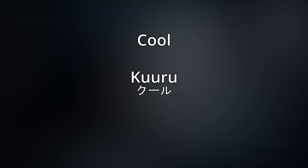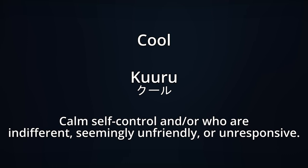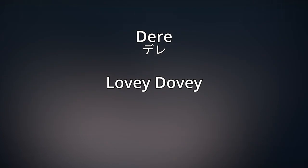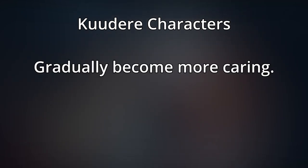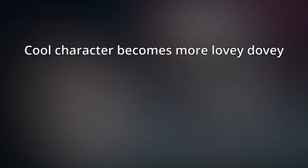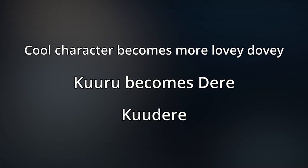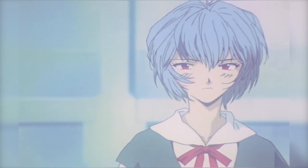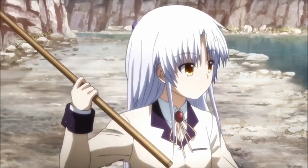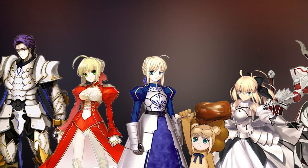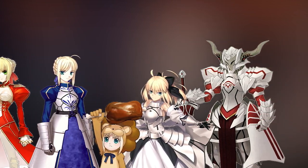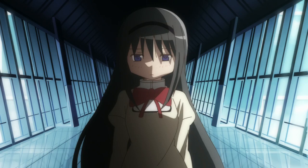Kuu actually comes from the English word cool, written as kuru in Japanese. Cool can mean a few different things, but in this case it's used to describe characters that have a calm self-control, and or who are indifferent, seemingly unfriendly, or unresponsive. And of course, Dere means being lovey-dovey. Kuudere characters are cool, stoic, and a lot of times come across as apathetic or cold-hearted. Throughout the events of the story, the character will gradually become more caring about others and actually start to treasure the ones around them. Some of the best examples of Kuudere characters would include Rei from Neon Genesis Evangelion and Kanade from Angel Beats. You could also throw in Saber from Fate Stay Night, though it should be mentioned it's that particular Saber and not to be confused with all the other Saber-class servants in the Fate series. One could also argue the case for Homura from Madoka Magica to be considered a Kuudere, and while that's mostly true, it's not so black and white — but we'll get to her and some other characters later in the video.